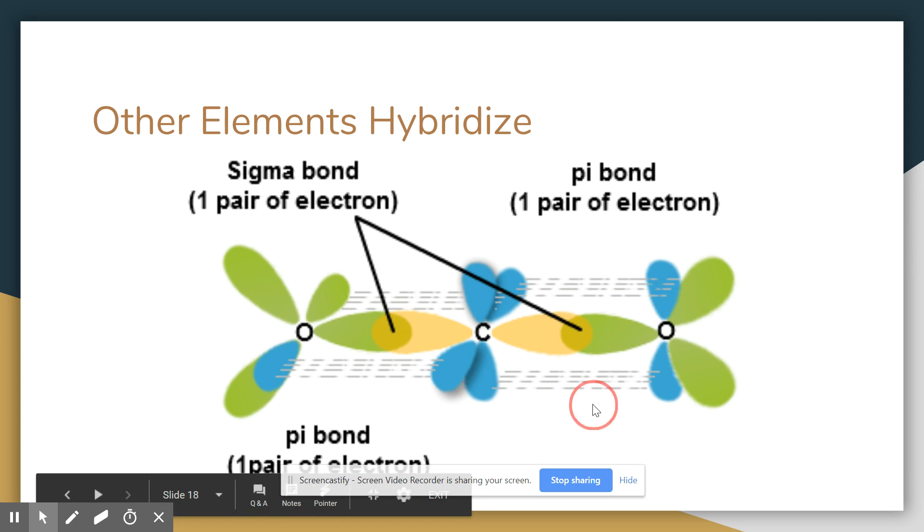Okay, so, that's the basics of hybridization and how carbon can form these multiple bonding situations with other elements or as well as with itself. Make sure you take good notes if you need it, and make sure you get some practice in identifying hybridization. And we'll see you next time.